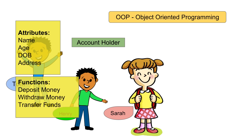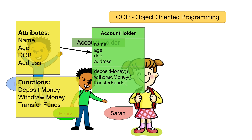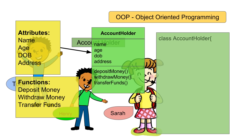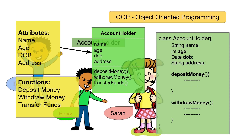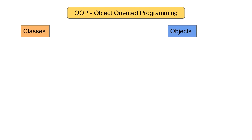In object oriented programming, we will create a class that has the same attributes and functions. The account holder class will have fields like name, age, date of birth, and address, and actions in the form of functions like deposit money and withdraw money. You can relate the account holder class to a real account holder in real life. A class is a template to define objects, and using this class we can create multiple objects — an account holder object for Tom, for Henry, and for Sarah.